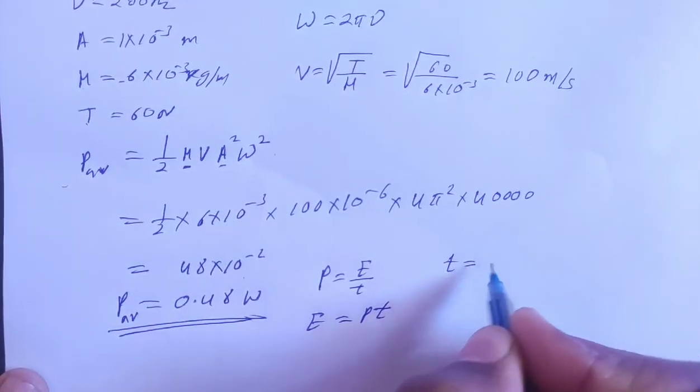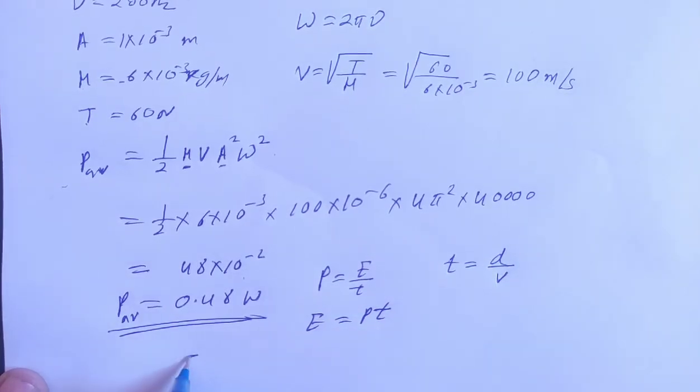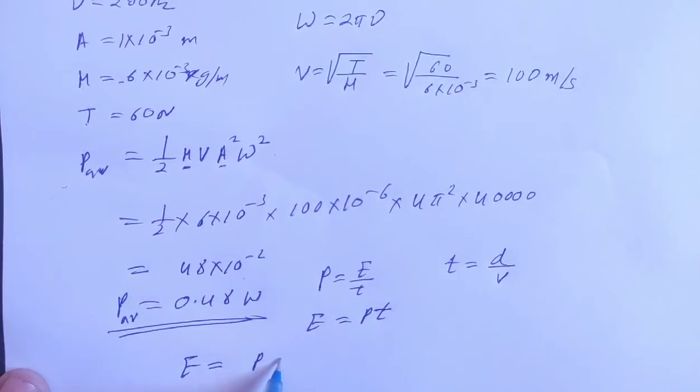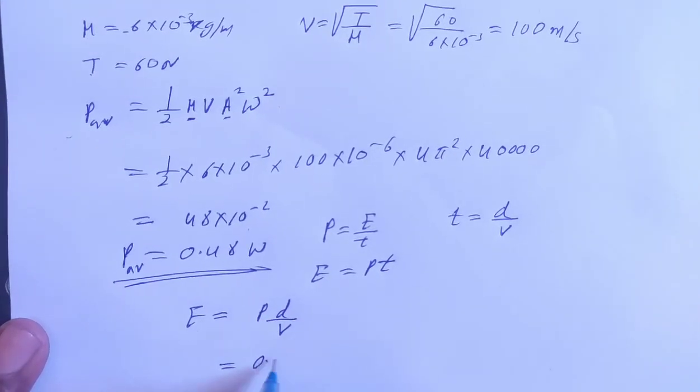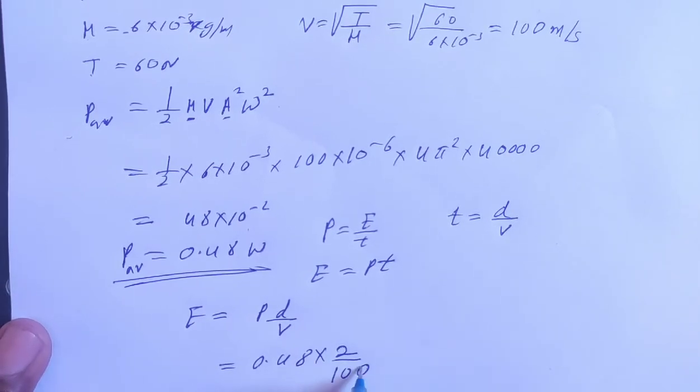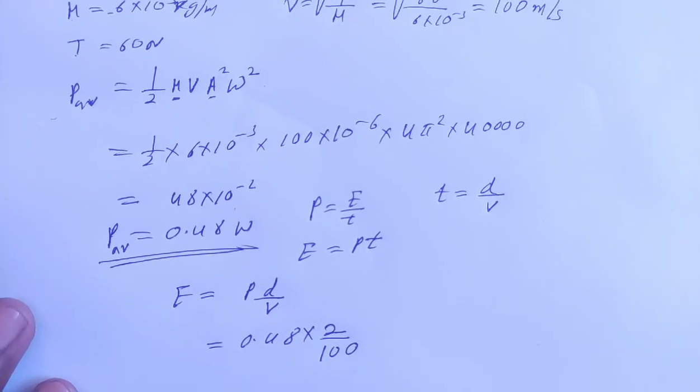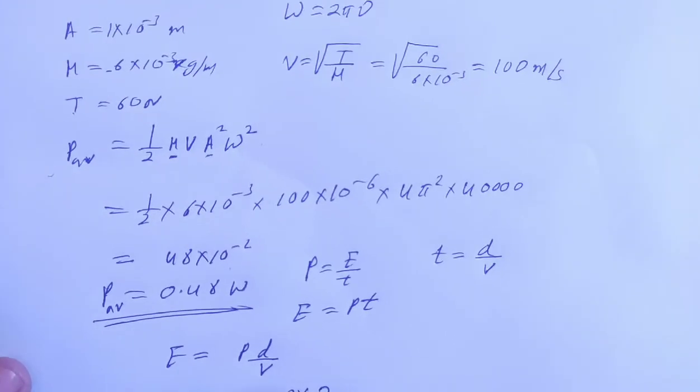Time equals distance by speed, so energy will be power times distance by speed. So power is 0.48, distance is 2 meters, and speed is 100. So here we will solve.